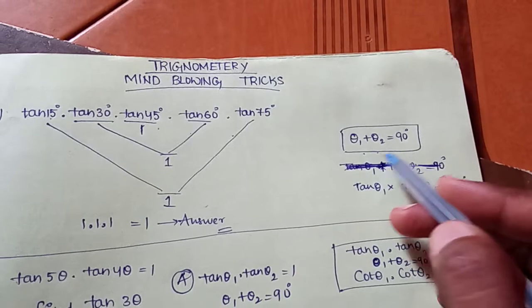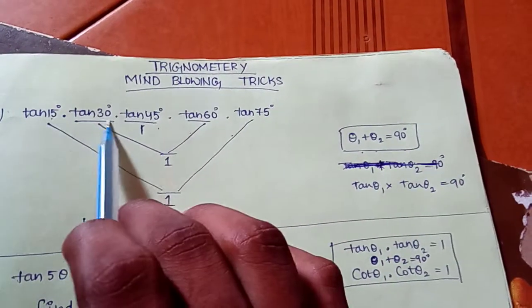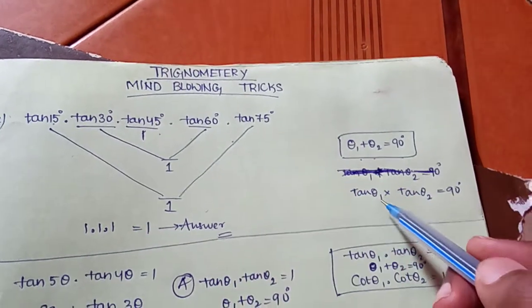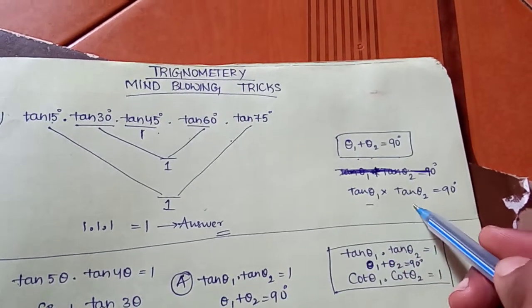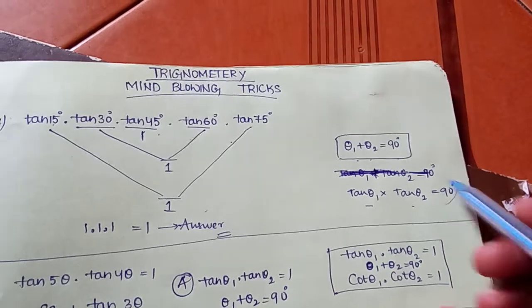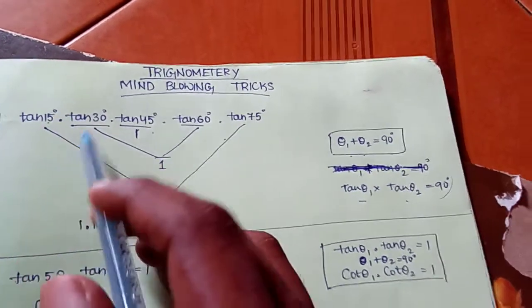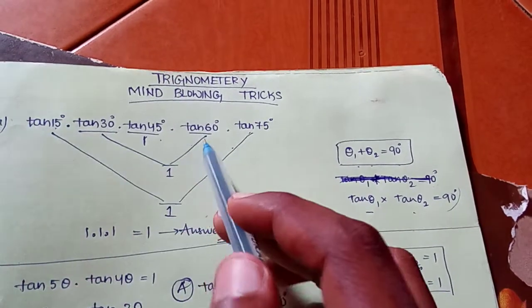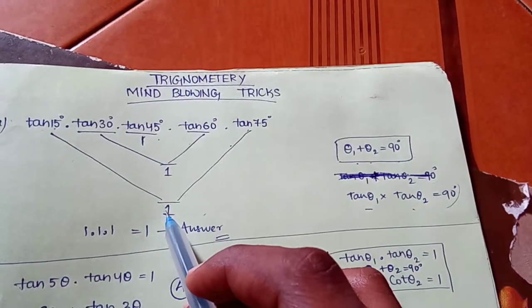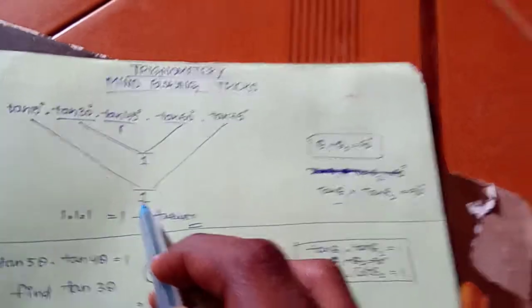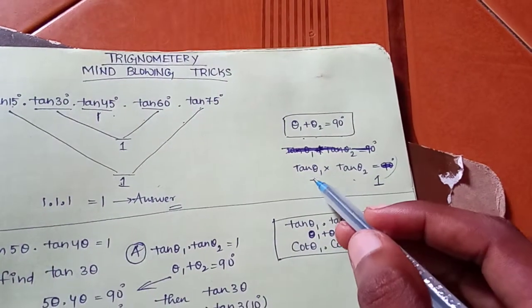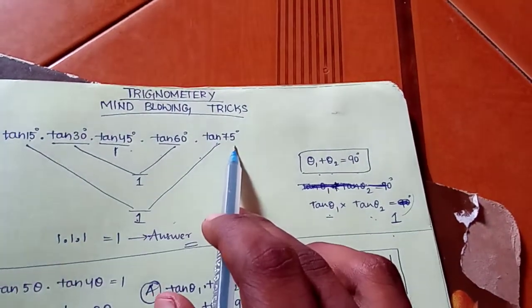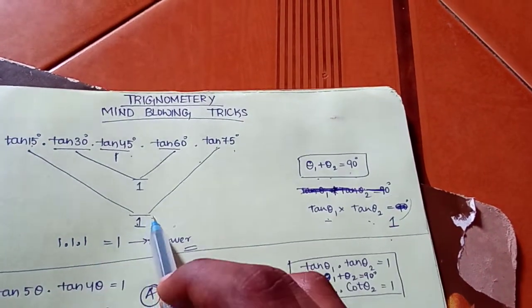The trick is: if Theta 1 plus Theta 2 equals 90 degrees, you have a complementary angle. So Tan θ1 × Tan θ2 = 1. Let's take Tan 15 and Tan 75 — since 15 + 75 = 90, Tan 15 × Tan 75 = 1.